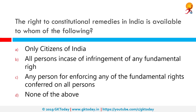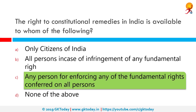The right to constitutional remedies in India is available to whom? The correct answer is any person. For enforcing any of the fundamental rights conferred on all persons, since the fundamental rights under Articles 14, 21, 21A, 22, 23, 24, 25, 26, 27, and 28 are available to both citizens as well as non-citizens who are not enemy aliens, any violation of these will attract enforcement of Article 32 of the Indian Constitution on direction by the Supreme Court of India.